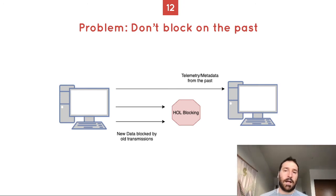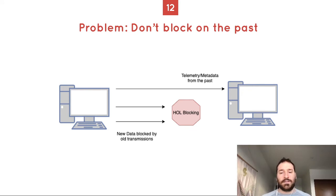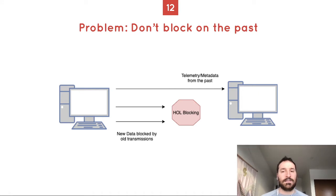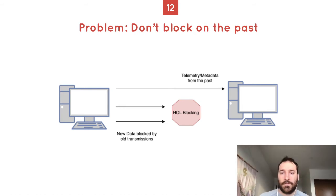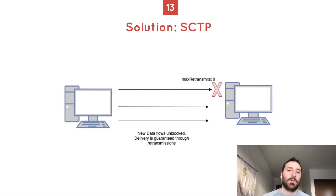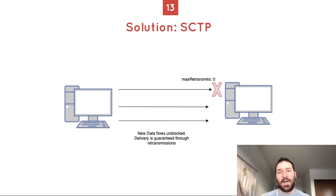WebRTC also has a solution for head-of-line blocking. The issue is: what if you send some data that isn't that important but you're blocking stuff that is important right now? Let's say you have a system sending telemetry data — it's not that important, but you're blocking valuable data. WebRTC data channels use a protocol called SCTP, and in that protocol you can mark certain packets as disposable — max retransmits of zero. So instead of blocking in a network with packet loss or a bandwidth bottleneck, new data flows unblocked. Guaranteed delivery is handled through retransmissions on other streams.